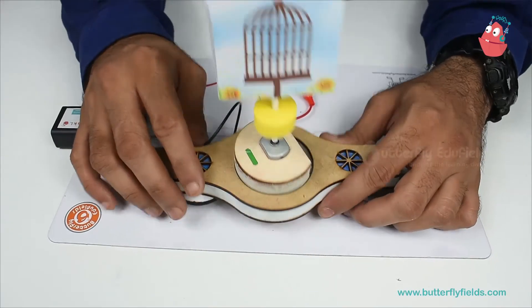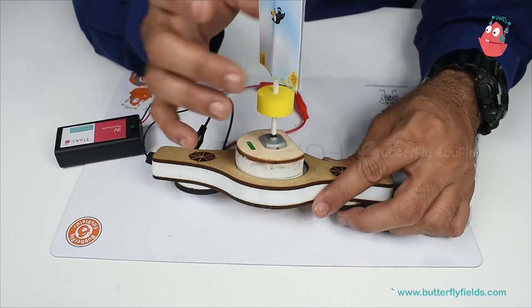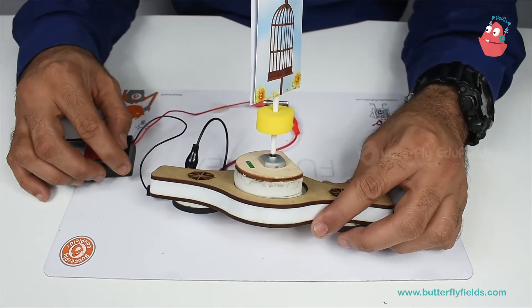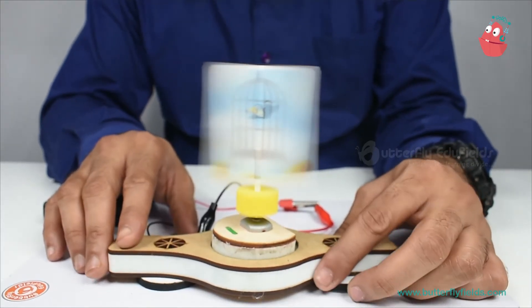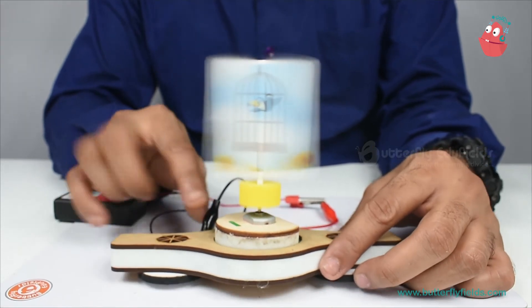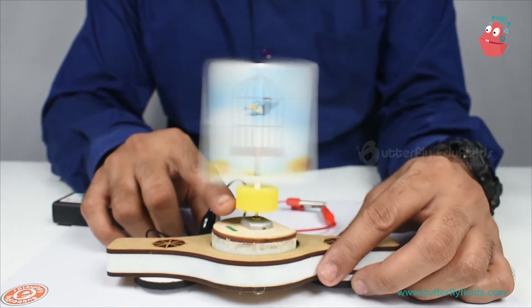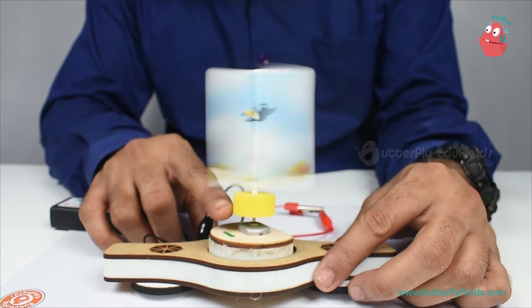Now you can see the bird on one side and the cage on the other. When I rotate it, the bird goes inside the cage. I can regulate the speed and control it.